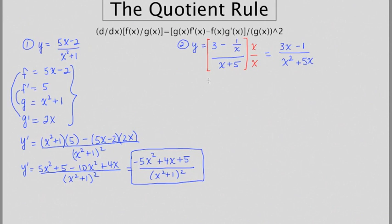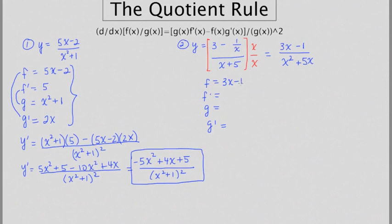I'm going to make my list again: f, f prime, g, g prime. f is the top function, which is 3x minus 1. g is the bottom function, which is x squared plus 5x. The derivative of 3x minus 1 is 3, and the derivative of x squared plus 5x is 2x plus 5.